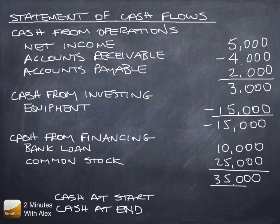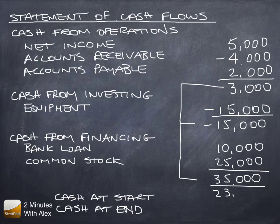We total each of these three sections: $3,000 minus $15,000 is minus $12,000, plus $35,000, which gives us $23,000.